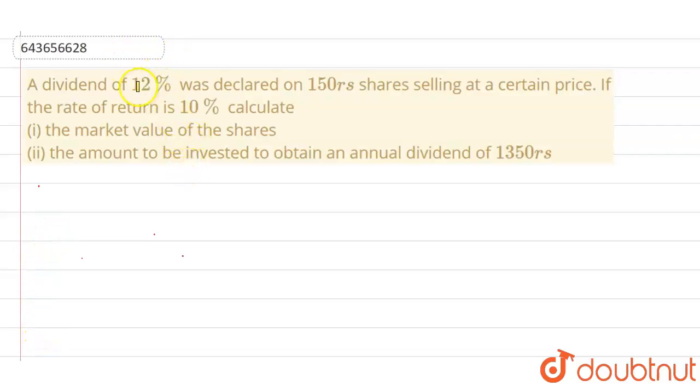The question says: A dividend of 12% was declared on 150 rupee shares selling at a certain price. If the rate of return is 10%, calculate (i) the market value of the shares, and (ii) the amount to be invested to obtain an annual dividend of 1350 rupees.